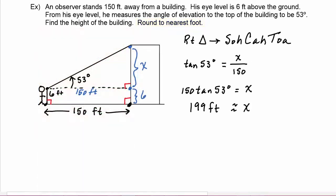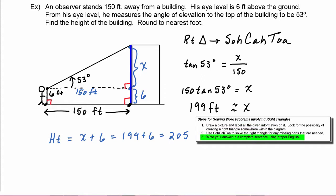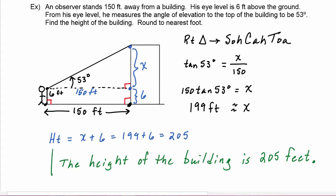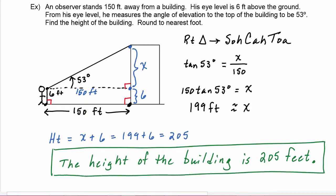To find the height of the building we add 6, so the height equals x plus 6, which is 199 plus 6, which is 205 feet. Now we write our answer as a sentence: 'The height of the building is 205 feet.' It doesn't have to be a long sentence, but it does need a subject, a verb, and a predicate, with a capital letter and punctuation — a proper sentence written in English.